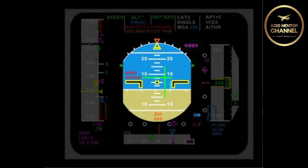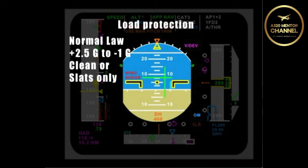Explain G protection in normal law. Load protection in normal law is from 2.5 positive Gs to minus 1 G when we are in clean configuration or slats only. If we have trailing edge flaps out, the range is limited from positive 2 to 0 Gs.